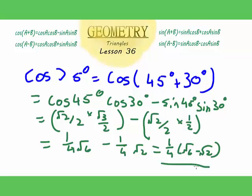And if you're wondering, you can put cos 75 degrees in your calculator, and you get this to be equal to 0.259, which is equal to this.